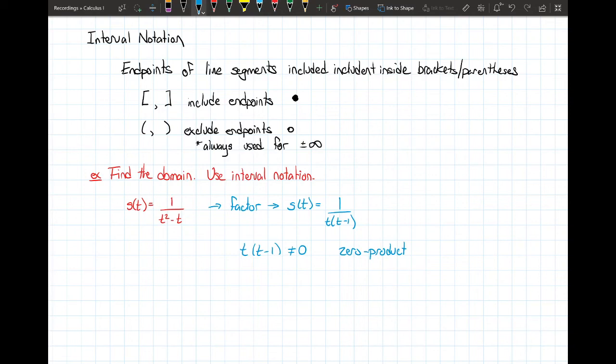We could take a look at one factor at a time, and we cannot let t equal 0, and we can also not let the other factor, t minus 1, equal 0. One of those is already solved. t cannot be equal to 0. The other one, we just add 1 to both sides, and t cannot equal positive 1.